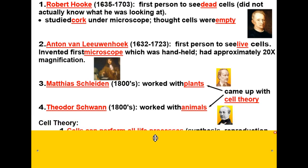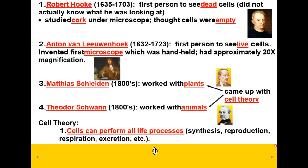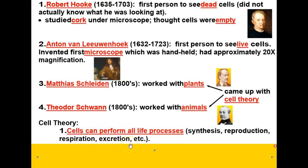The first main point of the cell theory is that cells can perform all life processes. These life processes include synthesis — which is to build — reproduction, in other words making more of themselves; respiration, the process of providing energy to itself; and excretion, which is getting rid of waste inside the cell.